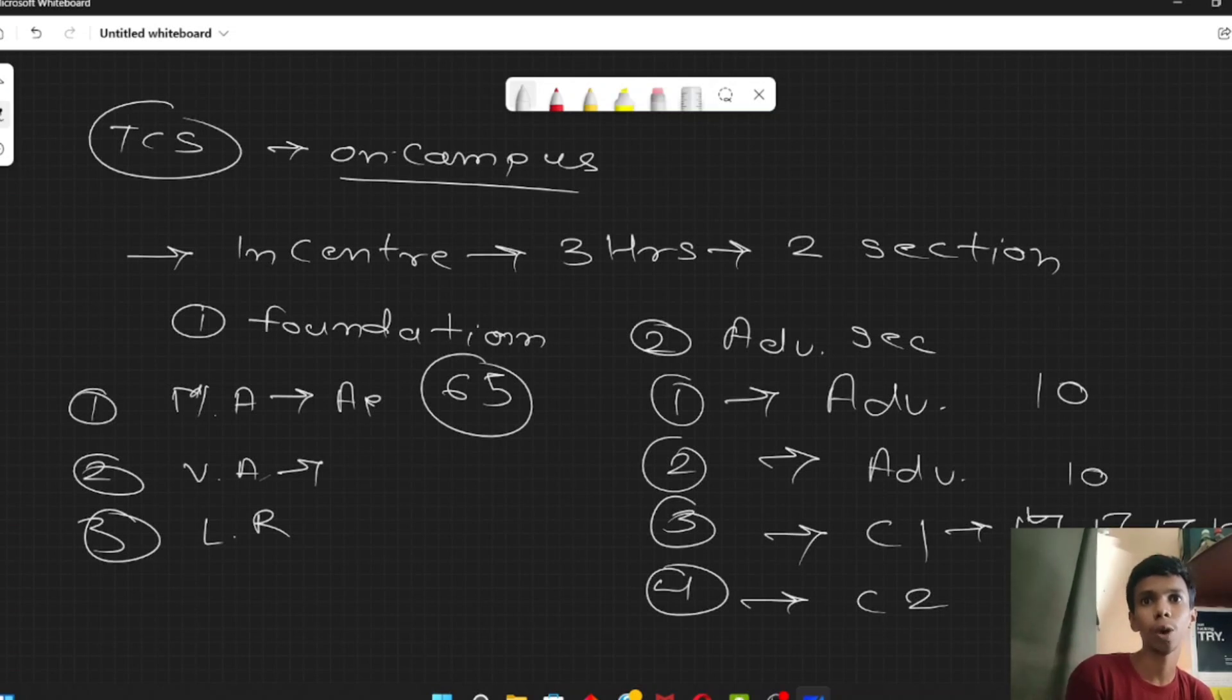If you want to give code in C, then choose section 1. If you want to give C++, then choose section 2. If you want to give Java, then section 3. If you want to give Python, then section 4. Similarly, in the second part, there were also these things. The first question of coding was 20 minutes, and the second question was 35 minutes.